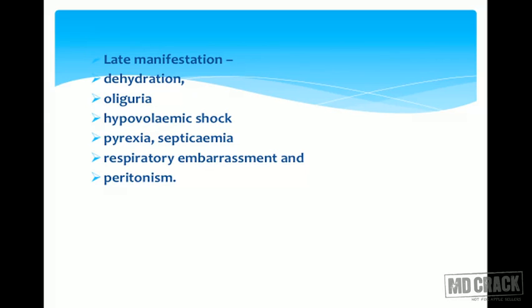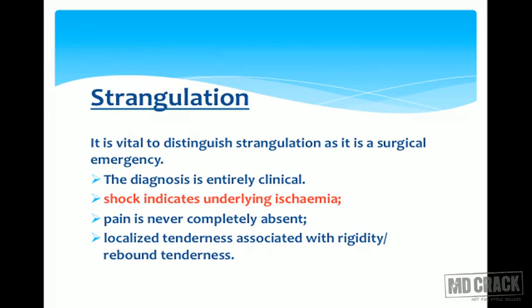Late manifestations include dehydration, oliguria, hypovolemic shock, pyrexia, respiratory embarrassment, peritonism, and finally septicemia. Regarding strangulation, it is vital to distinguish it as it is a surgical emergency. Diagnosis is entirely clinical — shock indicates underlying ischemia, pain is never absent, and localized tenderness associated with rigidity and rebound tenderness is seen.